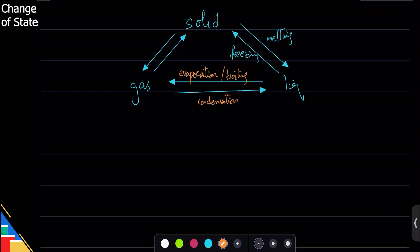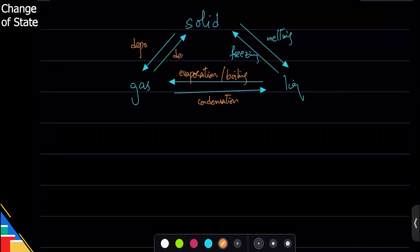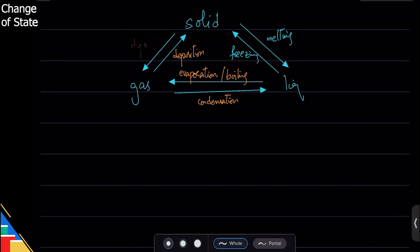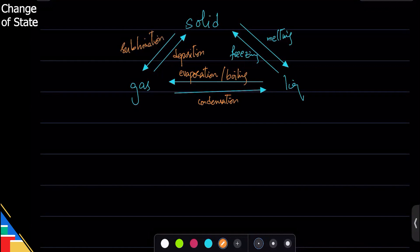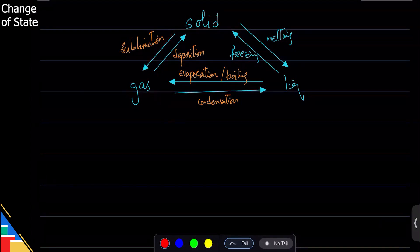Lastly, deposition is gas changing to a solid, and solid changing to a gas is called sublimation. This way it does not become a liquid. So if they ask you to define sublimation, you say that solid changing to gas directly without being a liquid.